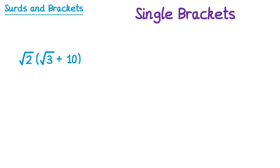Since the square root 2 is outside the bracket we're going to multiply it by everything inside the bracket. So we do square root 2 multiplied by square root 3 first — using our surd rule for multiplication, root 2 times root 3 is root 6. We then multiply square root 2 by 10. When you multiply an integer by a surd you just put that integer in front of the surd, so this is 10 root 2.